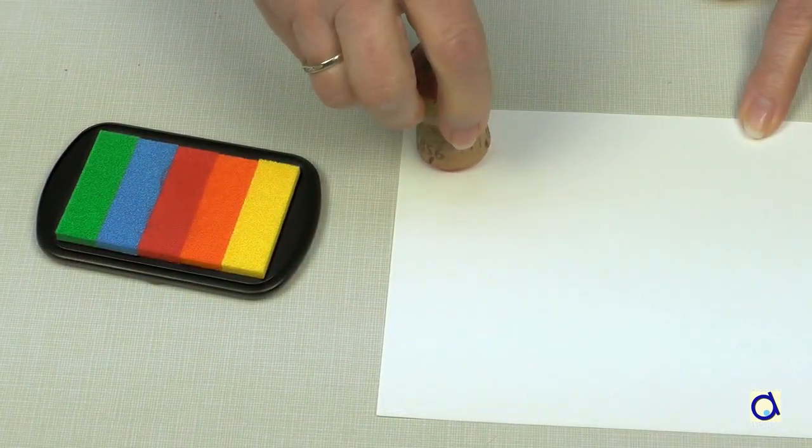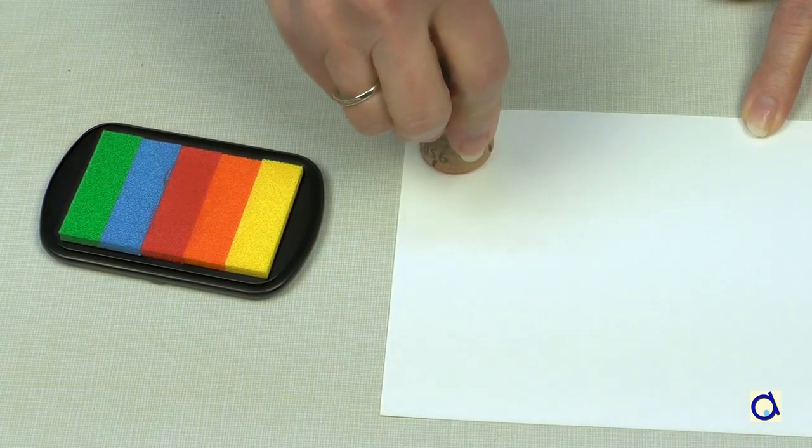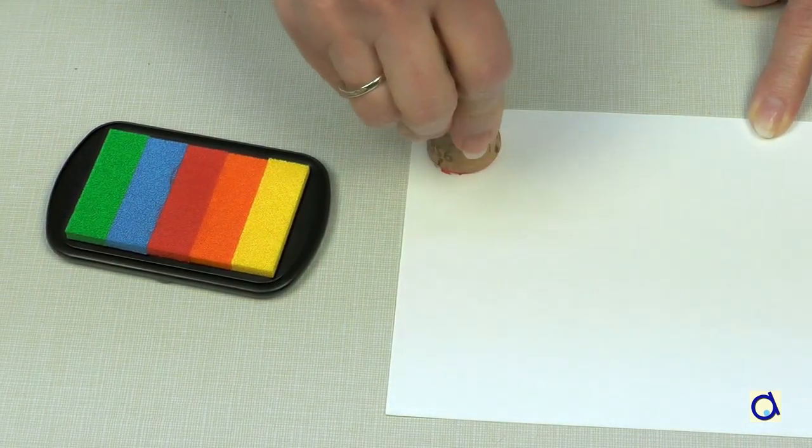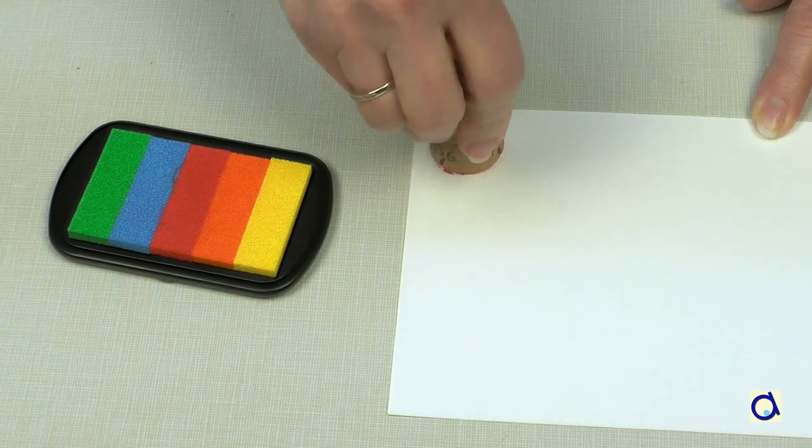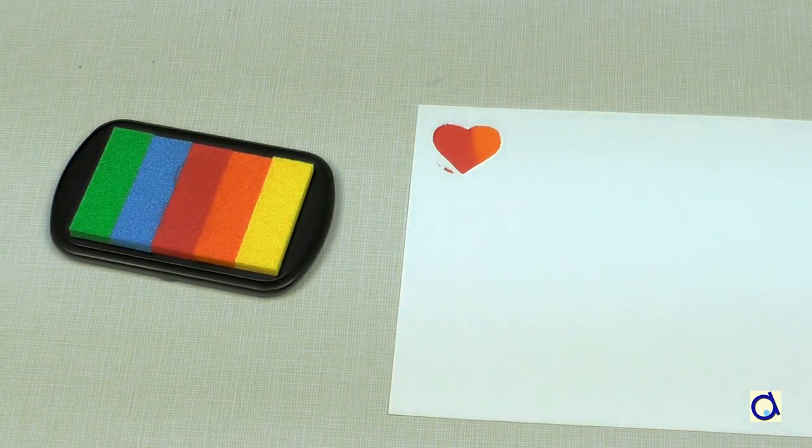Take the cork in your hand and press the foam shape onto the ink pad and print the shape on a sheet of paper. In this case, I made two color hearts.